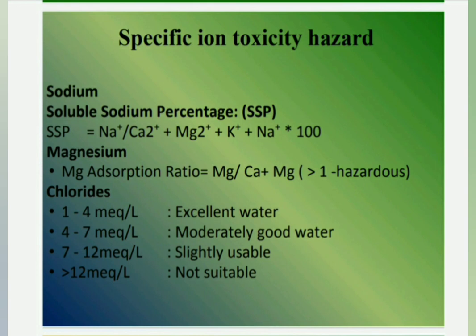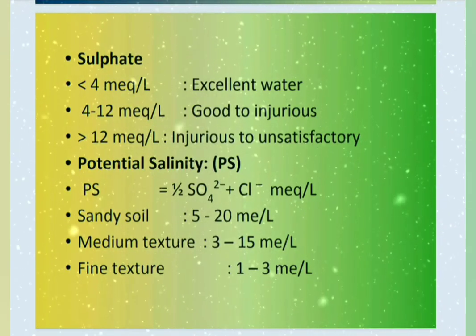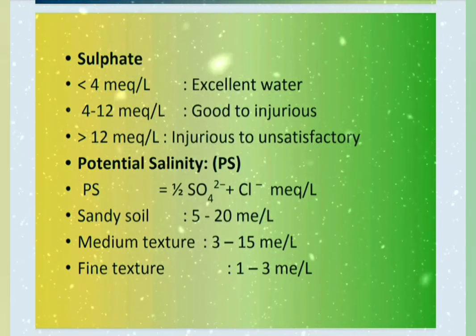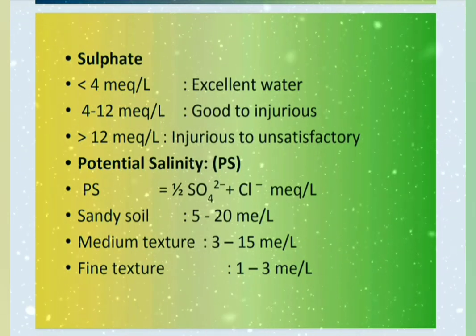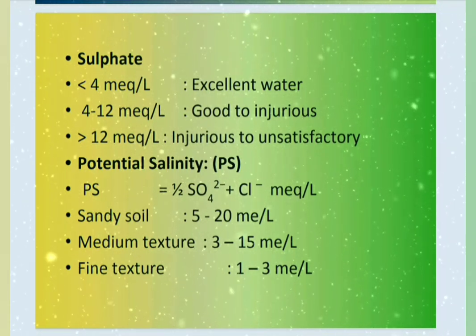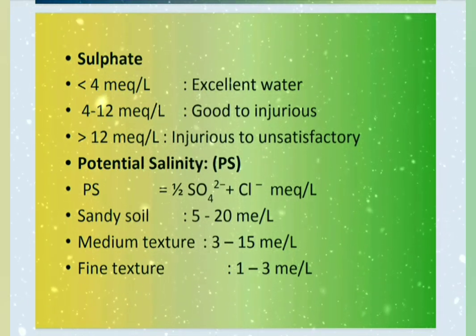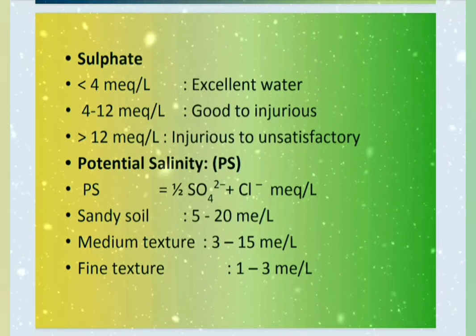Specific ion toxicity hazard. Soluble sodium percentage more than 60, magnesium more than 1, and chloride more than 12 indicate water that is not suitable for irrigation purpose. Sulfate causes less harm compared to chloride. This is because when both ions occur together, only half of the sulfate ion contributes to salinity.